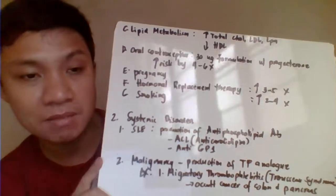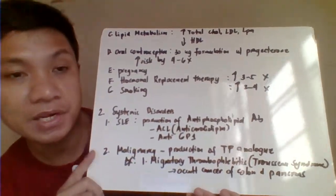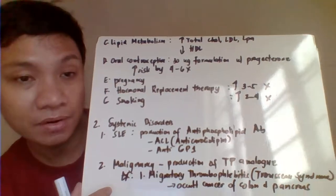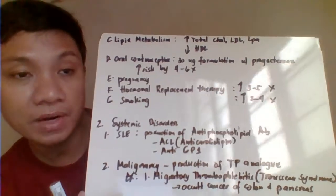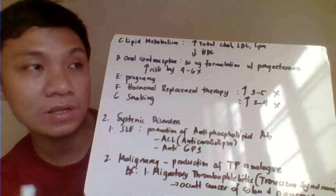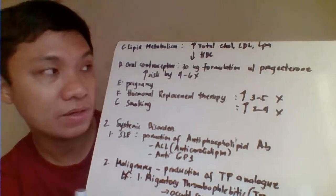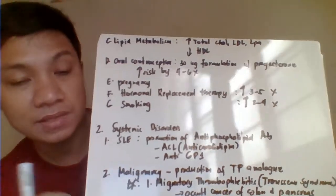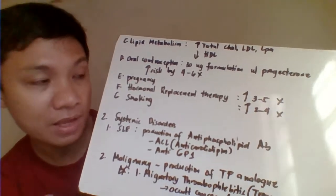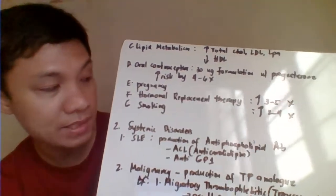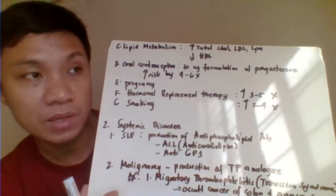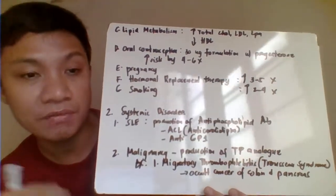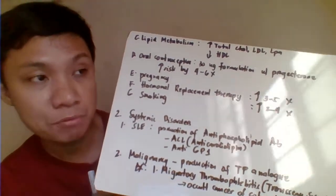Lipid metabolism is another acquired factor — higher chance of developing thrombosis if you have high total cholesterol, high LDL (bad cholesterol), high lipoprotein A, and decreased HDL (good cholesterol). Oral contraceptives with progesterone increase risk four to six times. Pregnancy also increases thrombosis risk. Hormonal replacement therapy increases risk by three to five times. Smoking increases stroke and thrombosis risk by two to four times.